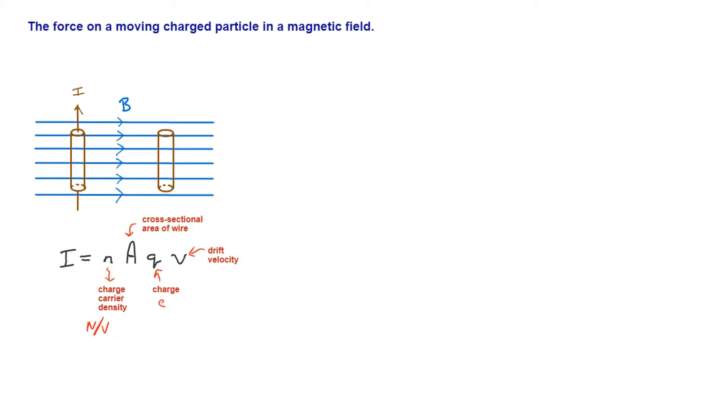So how does this help? If we take a look at F equals BIL, which we know is the force on this current carrying conductor on the left, we can actually insert into this equation. We can substitute I equals NAQV in and have a closer look at exactly what's going on. So let's do it. We really know then that F is equal to B, the magnetic field strength that the wire is in, times the current, which we can now write as NAQV, and then multiply it by the length.